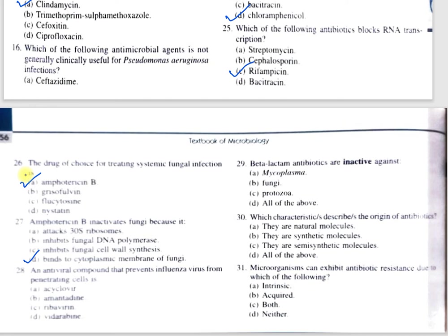Question number 28: An antiviral compound that prevents influenza virus from penetrating cells is — A, acyclovir; B, amantadine; C, ribavirin; D, ganciclovir. The correct option is B, amantadine. Amantadine prevents the binding of the virus to the cell. Question number 29: Beta-lactam antibiotics are ineffective against — A, mycoplasma; B, fungi; C, protozoa; D, all of the above. These beta-lactam antibiotics act on the cell wall, but mycoplasma, fungi, and protozoa don't have a cell wall or peptidoglycan, so option D, all of the above, is correct.